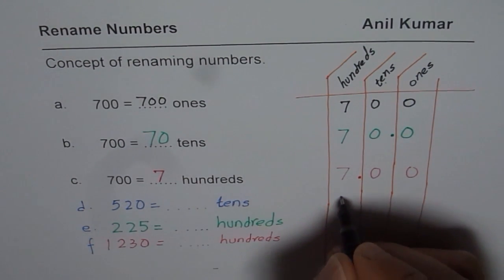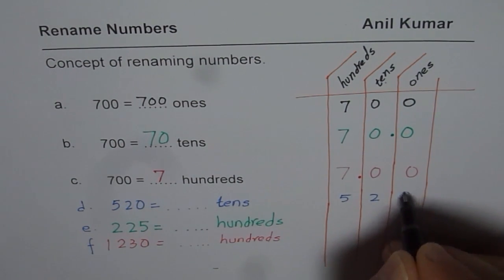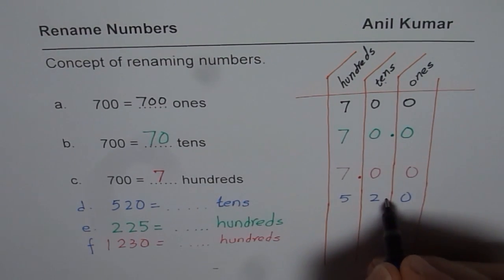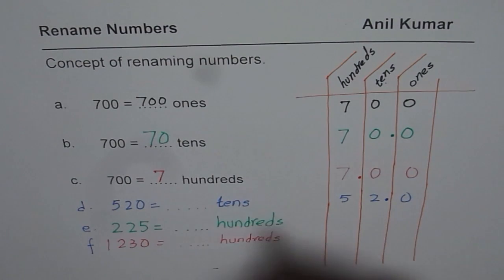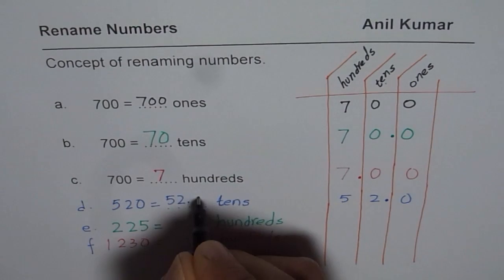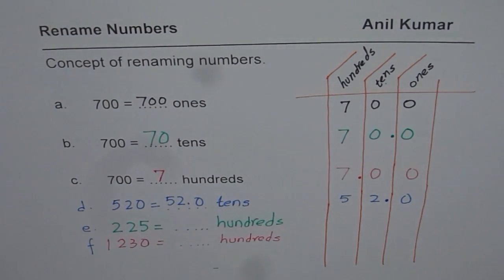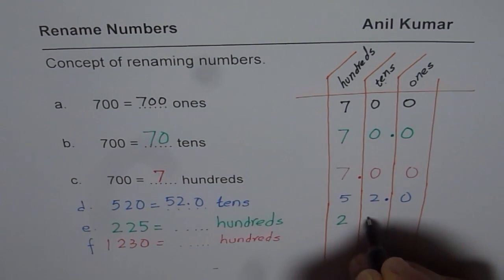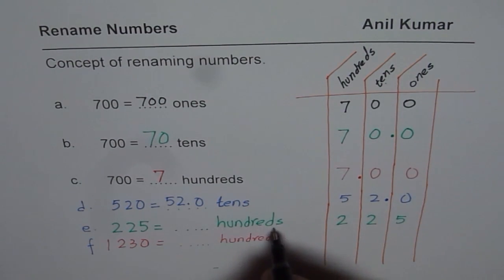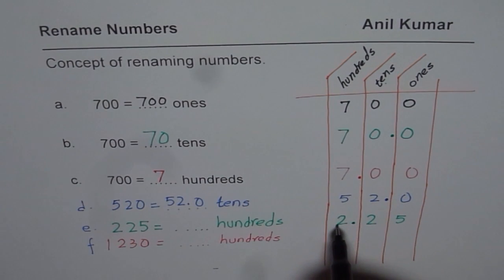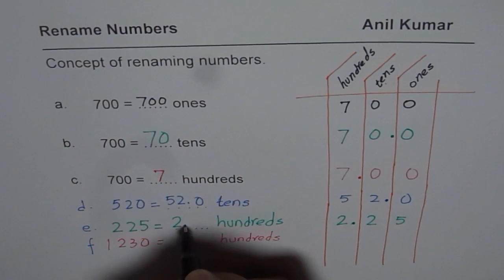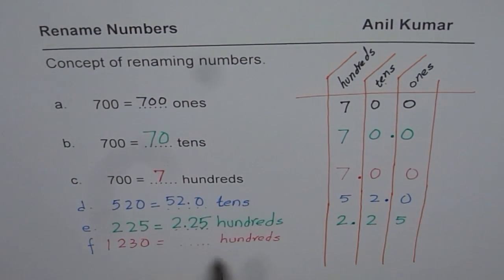For 520: first write down 520 in the place value chart. Since you want tens, put a decimal in the tens column, so you get 52.0 — meaning 52.0 tens. You can use decimals in your answer. Now for 225: write down 225 and put a decimal at the hundreds column, so you get 2.25 hundreds. So 225 is 2.25 hundreds — it is kind of like $2.25. Does that make sense?